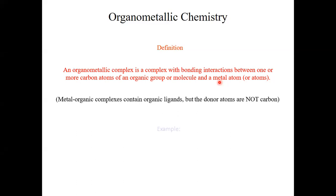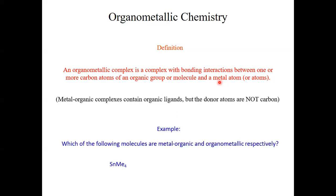To illustrate this by a simple example: when we have tetramethyl tin, this would be an organometallic compound because we have a direct interaction between the metal and the carbon atom. To the contrary, tetramethoxy tin is not. It also has a methyl group, but this methyl group is bonded via an oxygen atom to the tin atom. Therefore, this would be an example of a metal-organic compound, but not an organometallic compound.